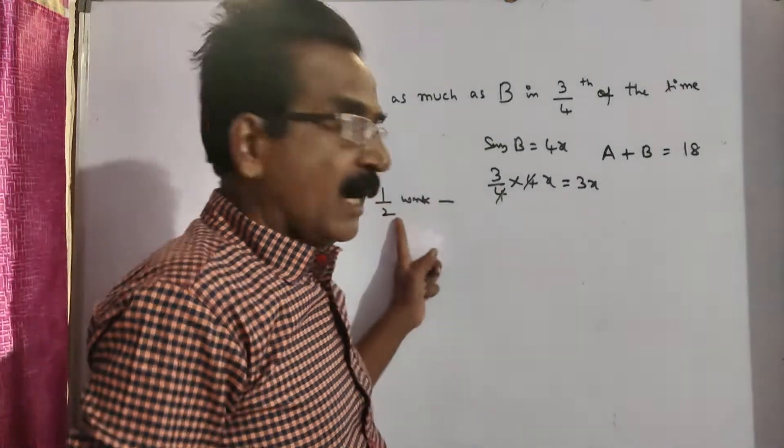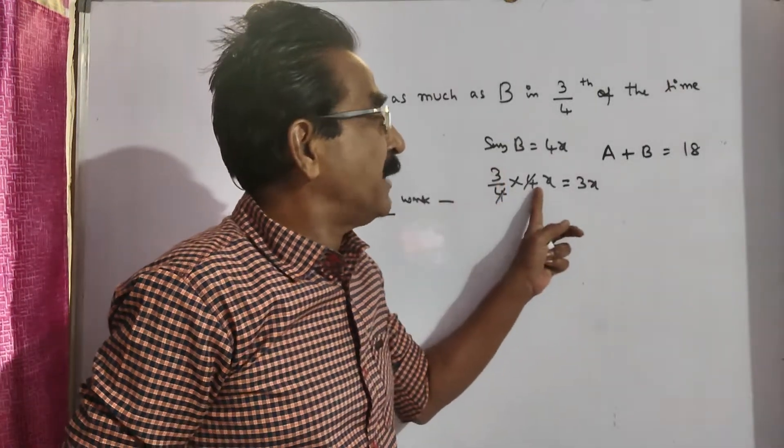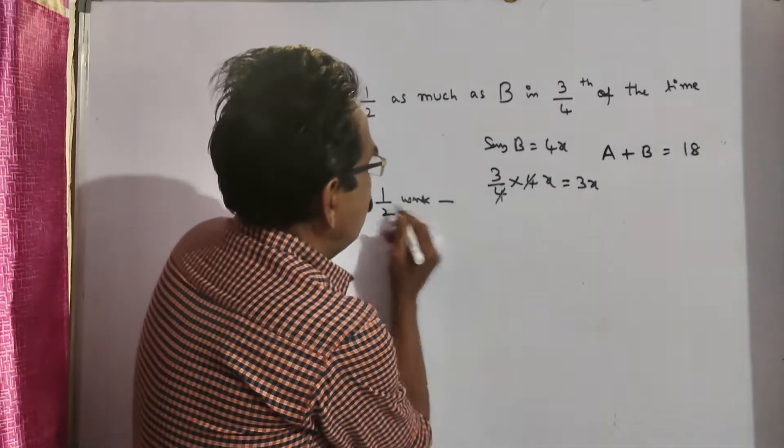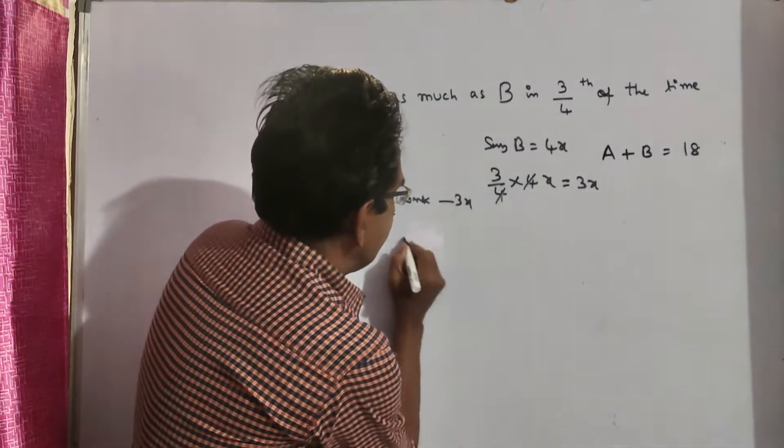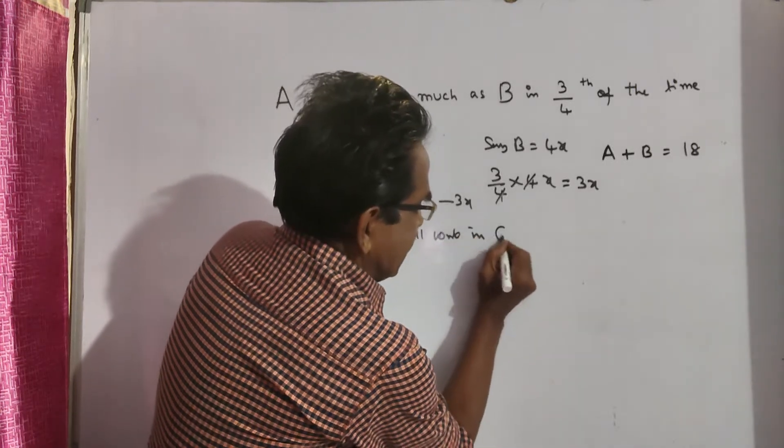So A does half work, 1/2 work in 3/4 of the time taken by B. That is 1/2 work in 3x days. So full work in 6x days.